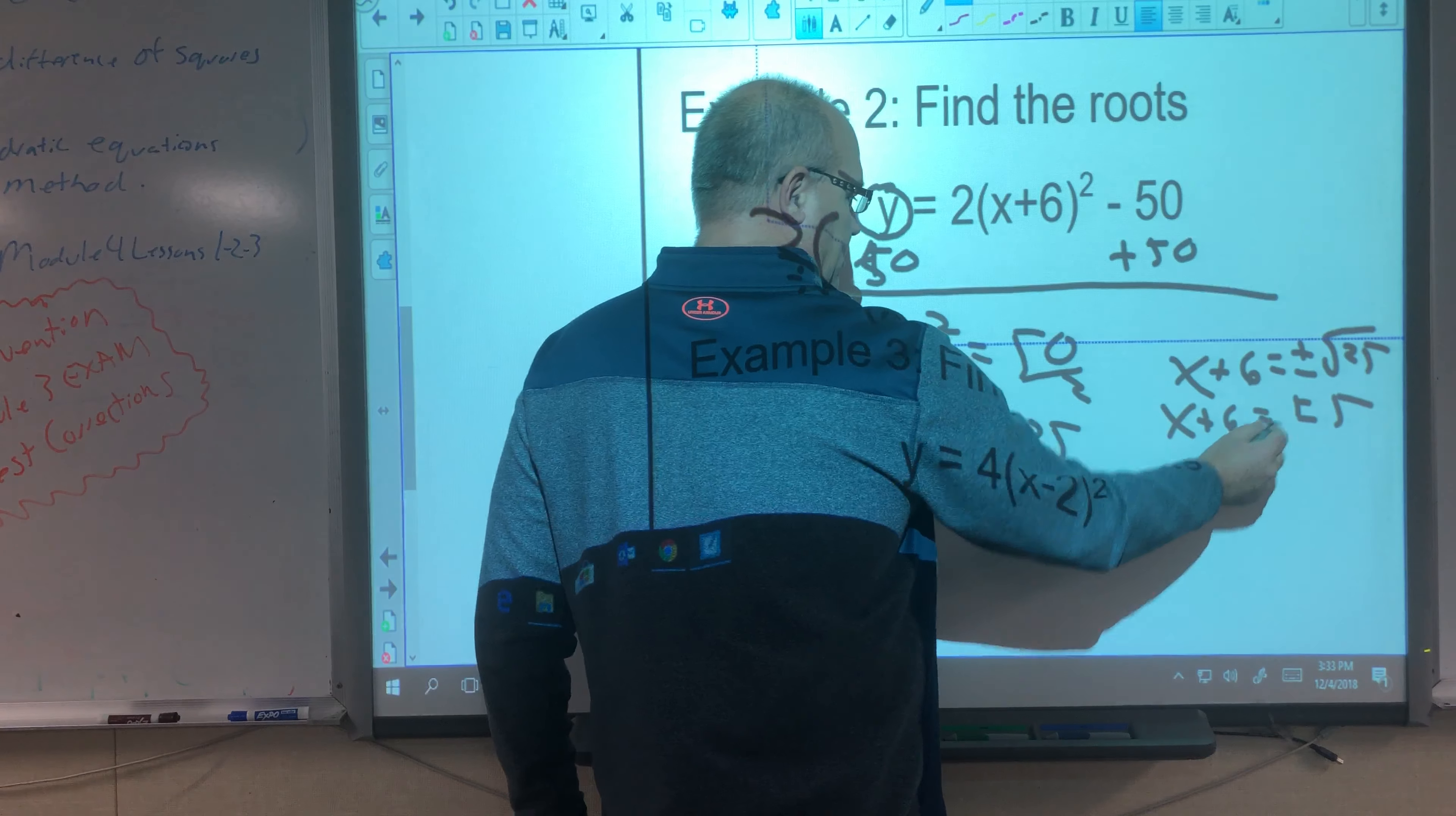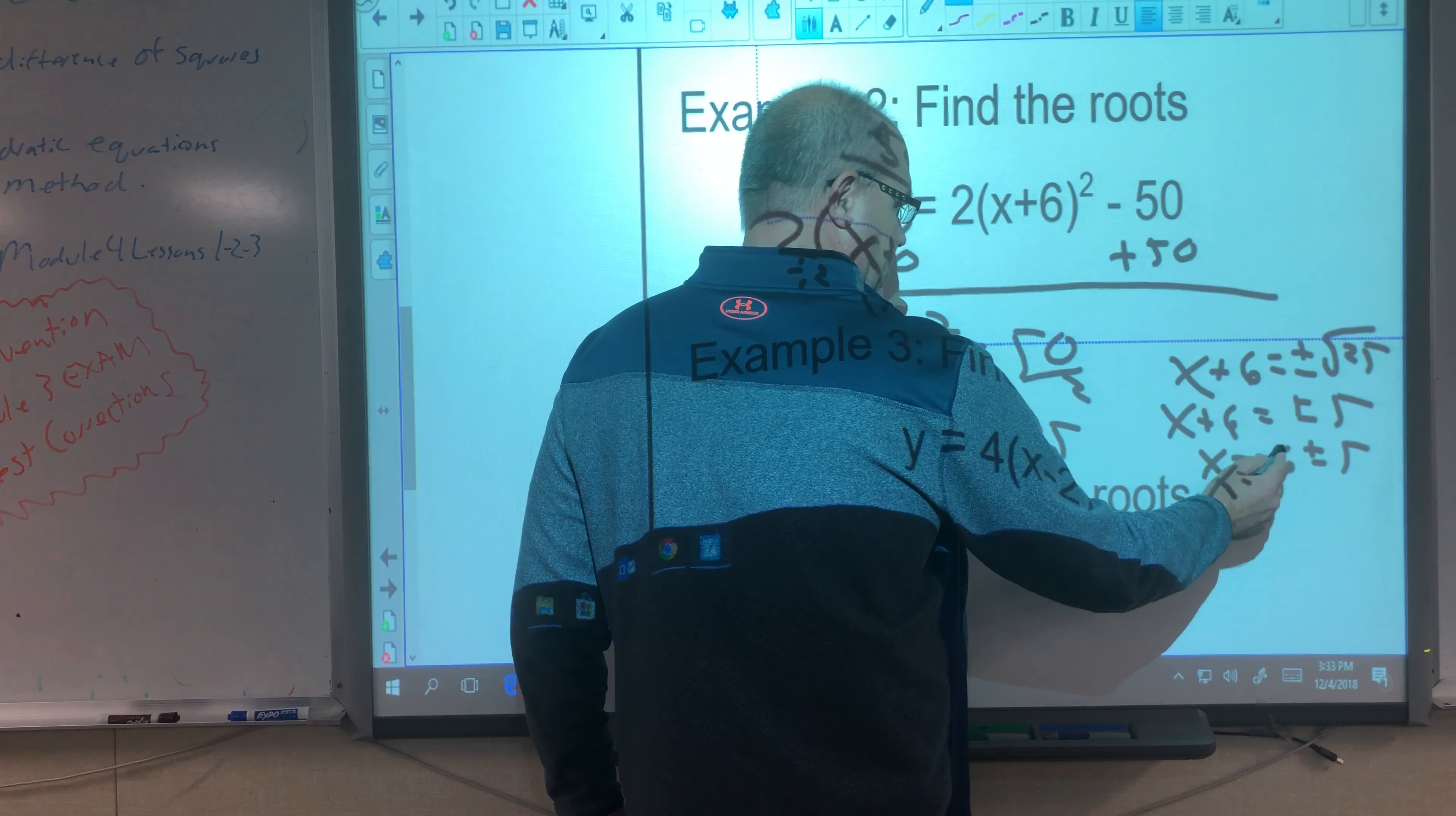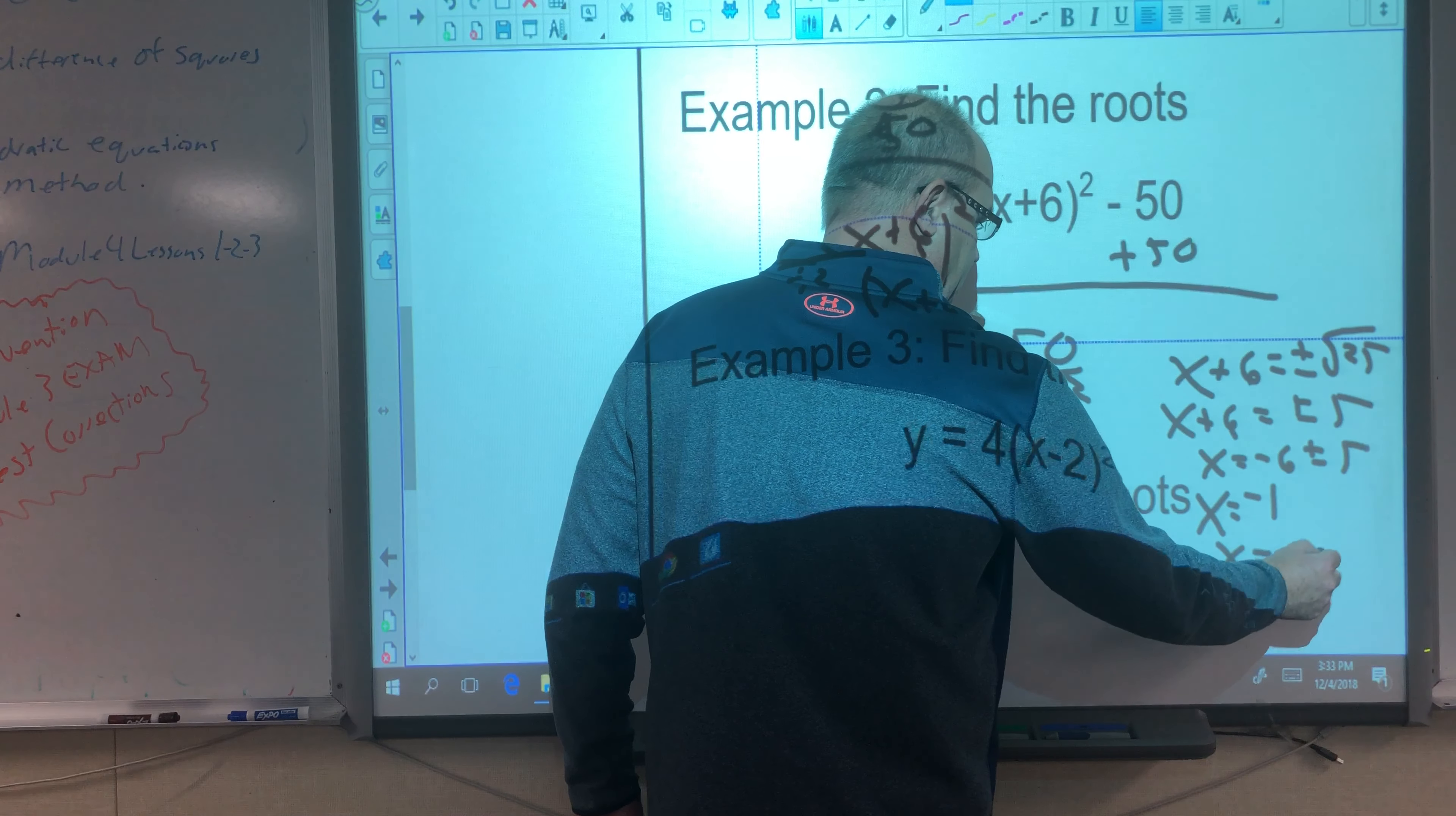I'm going to subtract 6 from both sides. x equals negative 6 plus minus 5. Make sure you know what the plus minus symbol means. x equals negative 6 plus 5, negative 1. x also equals negative 6 minus 5, which is negative 11.